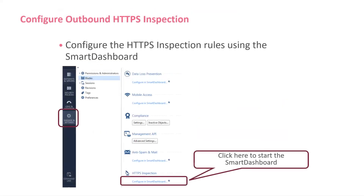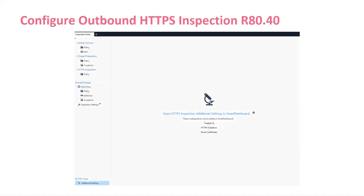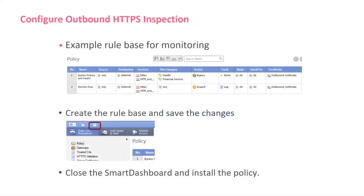Configuring the outbound HTTPS inspection: go to manage settings and turn it on. Here's where you actually create your rule base. Remember that in your area you may have to bypass certain types of HTTPS traffic — be aware of that. I'm using an older deck because of a corrupt hard drive issue, but the screen captures should be mostly the same.